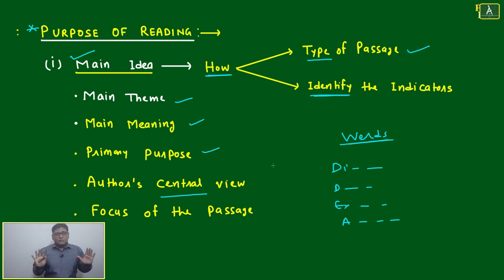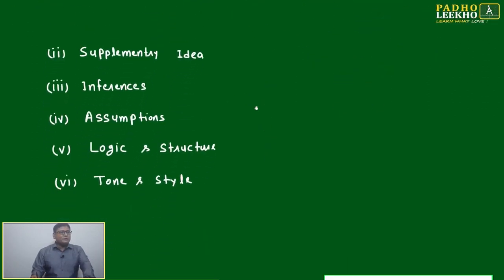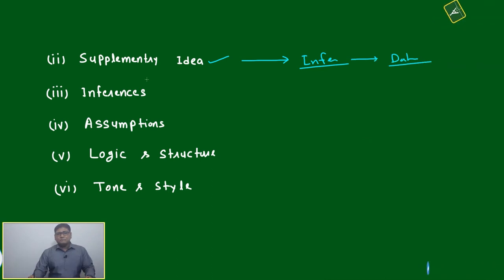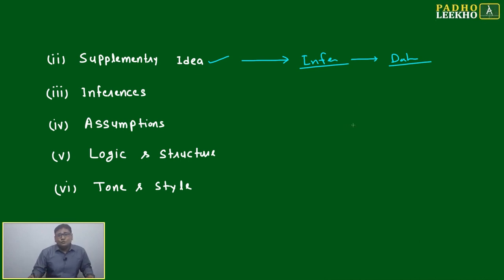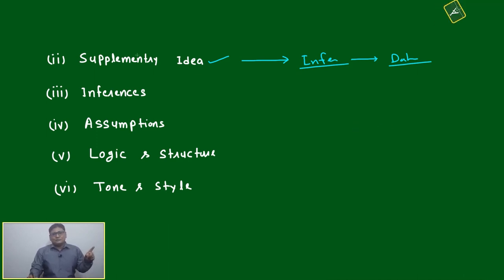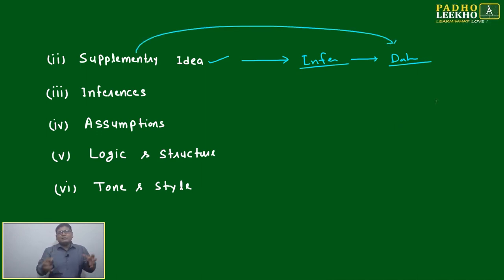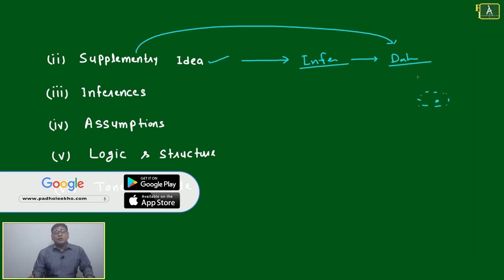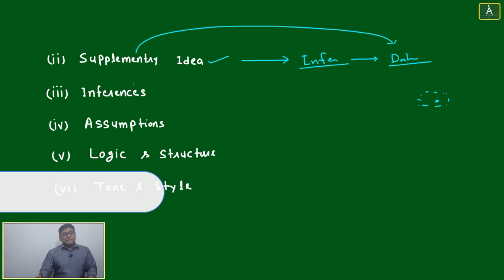If you understand the main theme or main idea of any passage, your 50% job is done. Next, look at supplementary ideas. Supplementary ideas are helpful in solving inference-based questions and data-based questions. If you don't know the supplementary side ideas on which the main idea is built, you may solve main theme questions but get stuck in inference and data-based questions. Database questions are about the crux and the surrounding supplementary facts.